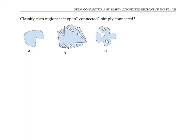Please pause the video for a moment and classify each region — decide if it's open, connected, and simply connected. The first region is open, because it doesn't contain any of its boundary points. It's also connected, because it just has one piece. And it's simply connected, because it doesn't have any holes.